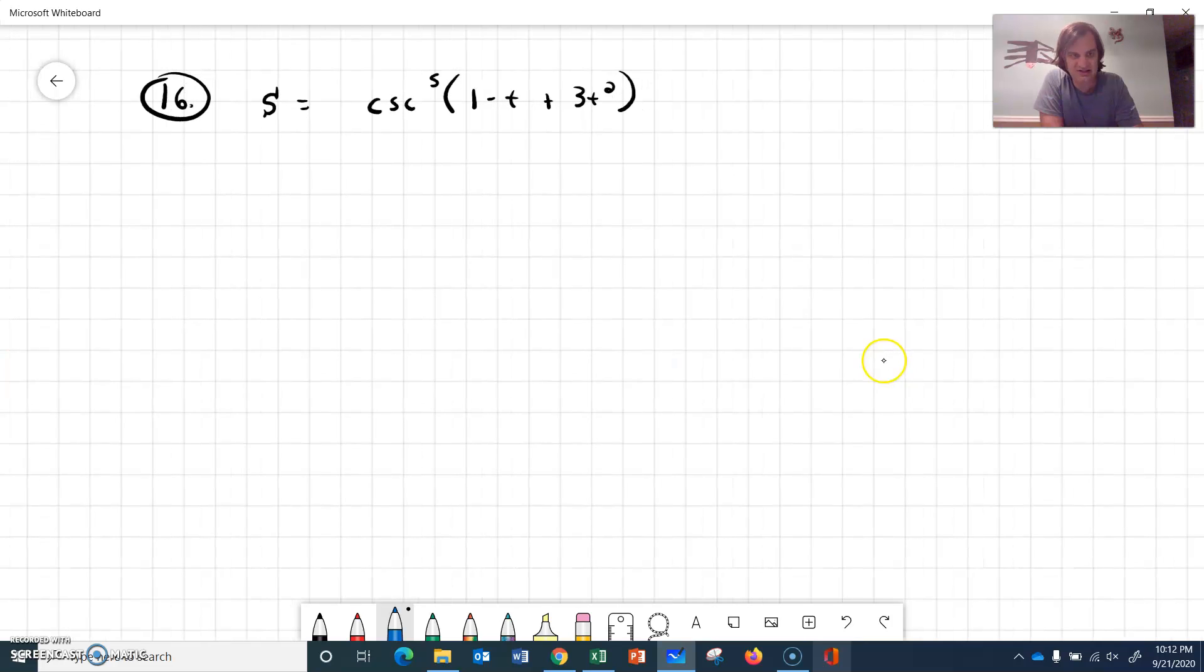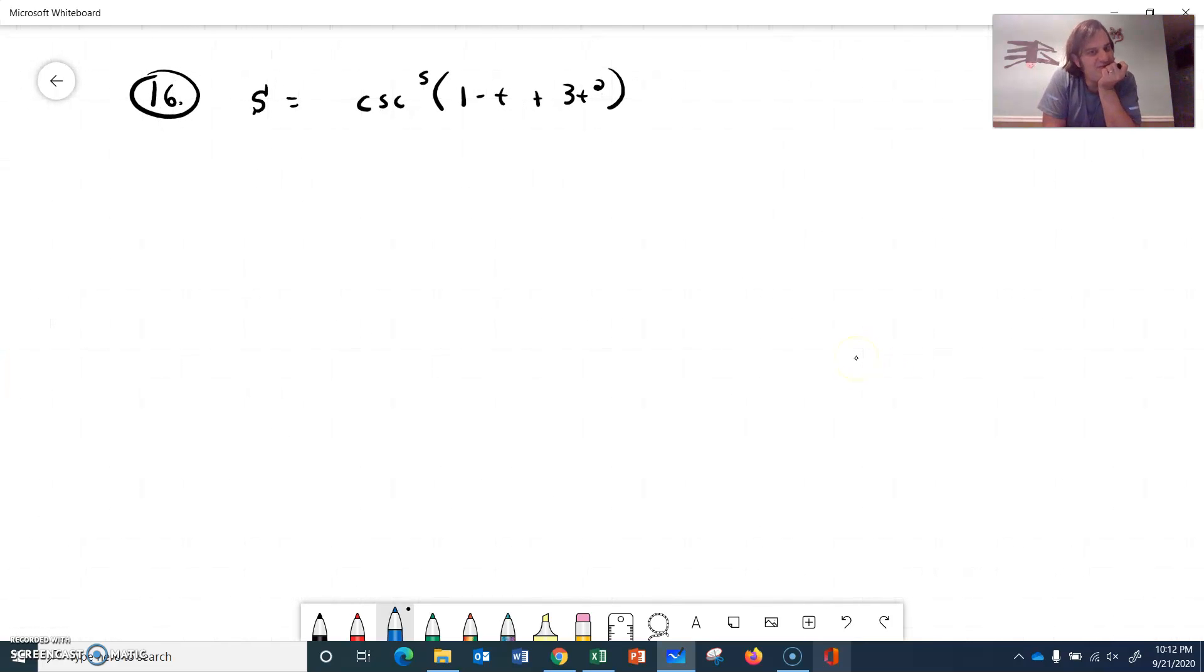All right. Let's go to 16, the last one for this video. So S equals cosecant of 1 minus T plus 3 T squared. And that cosecant is to the fifth. So let's just rewrite it similar to what we did in the previous one. So we'll have S equals, we're going to use our big bracket. So cosecant of 1 minus T plus 3 T squared, all that raised to the fifth. So using the brackets kind of shows us that we've got a big old power rule. Yeah, a big old power rule with a chain rule with the U inside being the cosecant function.